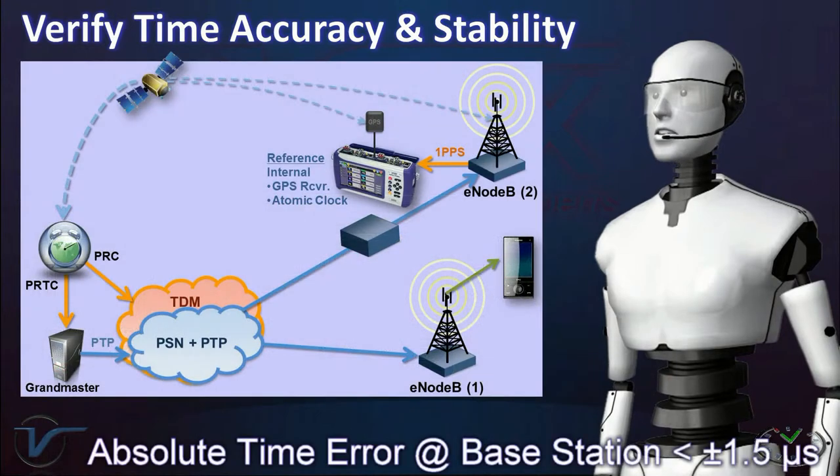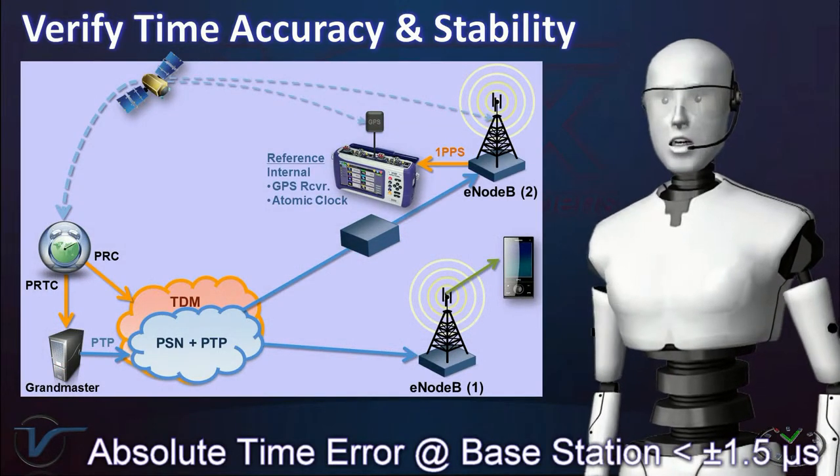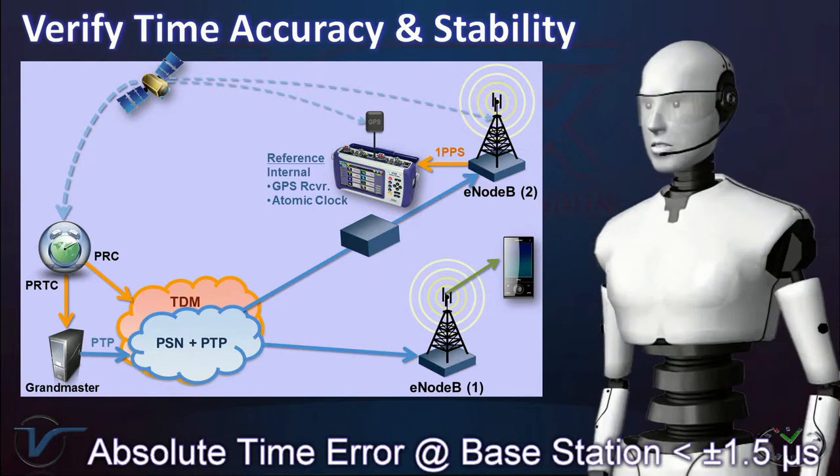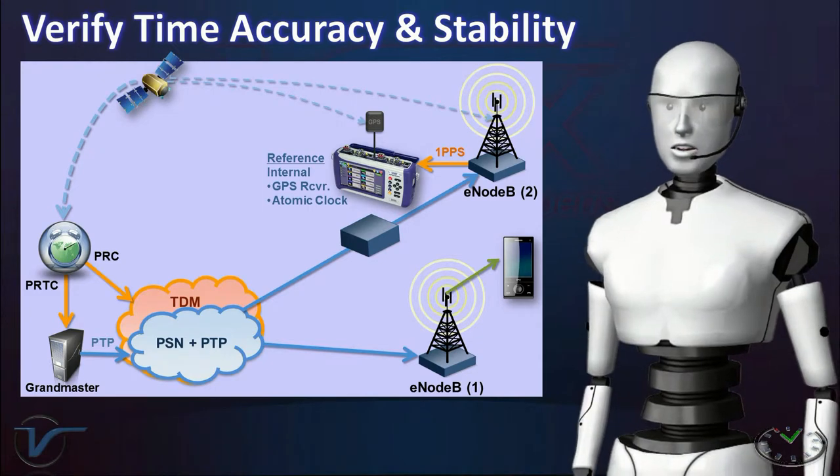In 4G cellular networks, the absolute timing error at any base station must be less than 1.5 microseconds to assure glitch-free handovers to and from neighboring base stations.